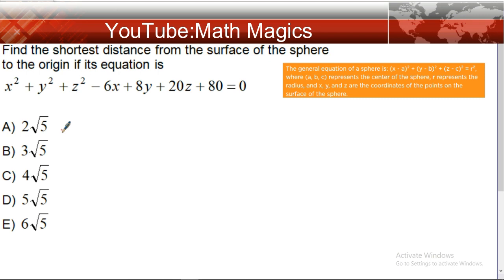minus 6x plus 8y plus 20z plus 80 equals zero. First, find the center and radius of the sphere. To find the center, we organize the numbers and complete the square for x, y, and z.